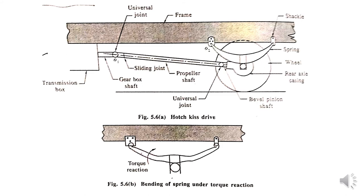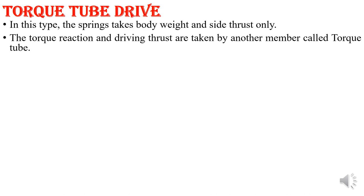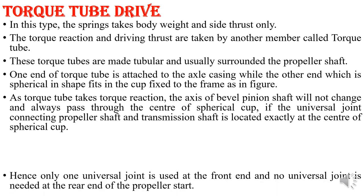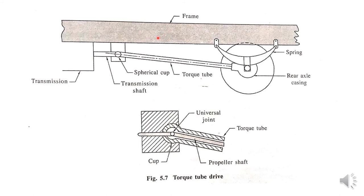In this way the Hotchkiss drive works. Next we have the torque tube drive. In the torque tube drive, the spring takes only body weight and side thrust, and a separate torque tube is provided over the propeller shaft that takes care of torque reaction and driving thrust.